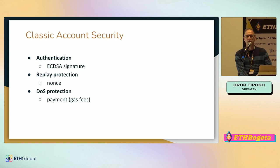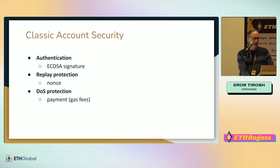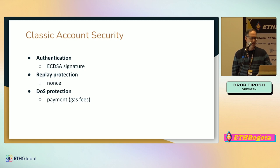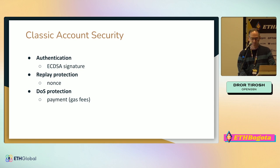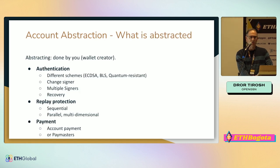Before we do account abstraction, it's important to understand account security. What is basic account security? Account security does three things: authentication, replay protection, and DOS protection — those gas payments we're paying. The mechanisms used by the system for DOS protection are not just fines. When we say account abstraction, what we basically abstract is all of these.